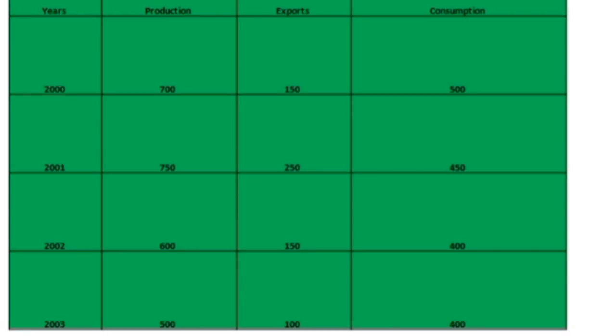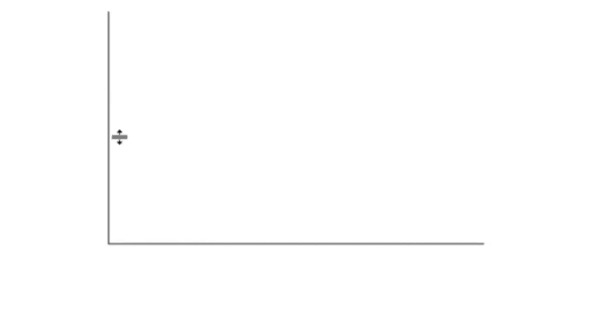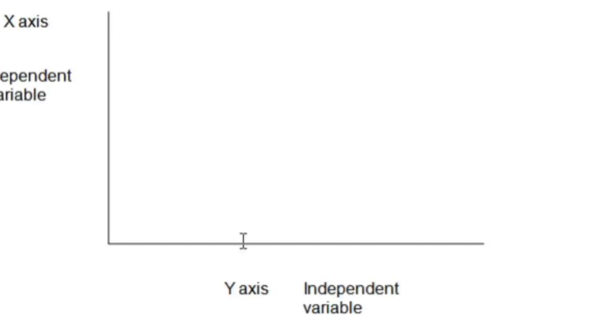First, we will make a vertical bar graph. For a vertical graph, we draw a line like this. This is the x-axis and this is the y-axis. We put the dependent variable on the x-axis and the independent variable on the y-axis.